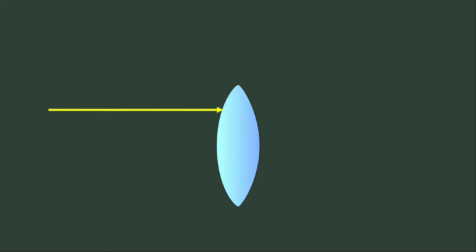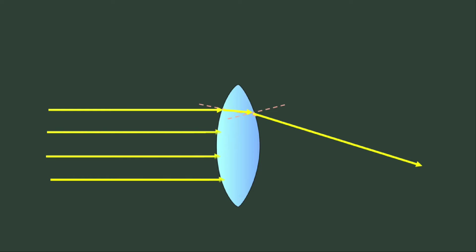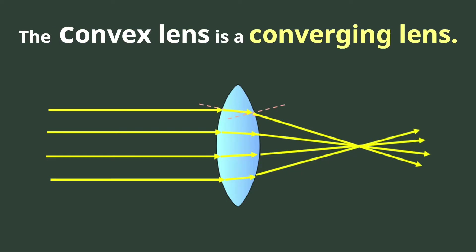Let us visualize the effect of the convex lens on light rays. When the light ray coming from the object hits the air-lens interface, the lens has a higher refractive index than the air, causing the speed of the light ray to decrease, and the light ray bends towards the normal. As it emerges from the lens-air interface, the speed of the light ray increases and it bends away from the normal. The same thing happens to other parallel rays passing through the lens. Notice that the light rays converge at one common point called the focus or focal point. That is why the convex lens is called a converging lens.